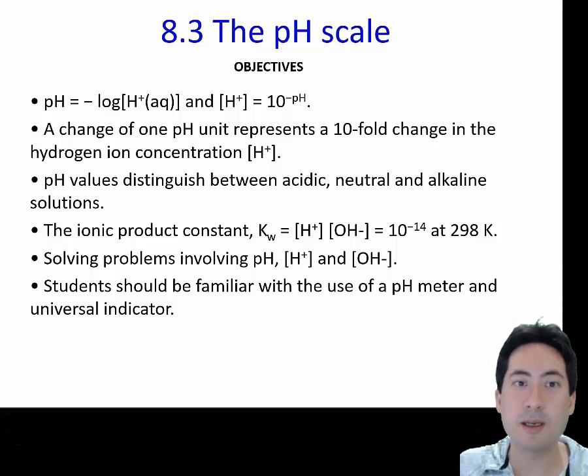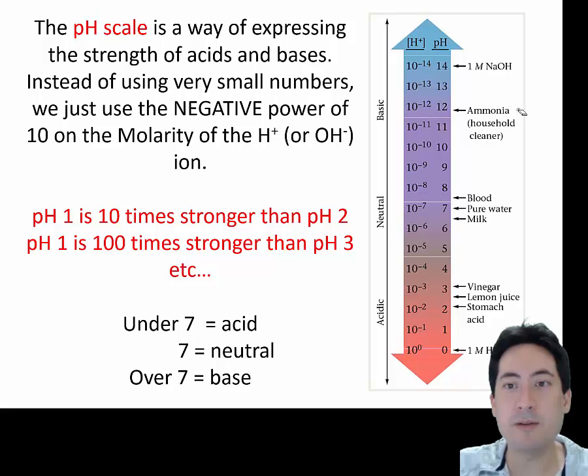These are the objectives for lesson 8.3. The pH scale converts very difficult numbers with large numbers of zeros into more manageable numbers from 1 to 14.